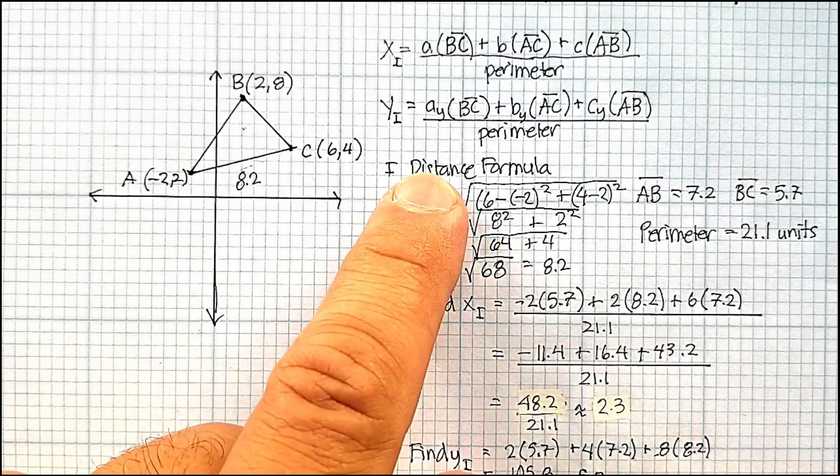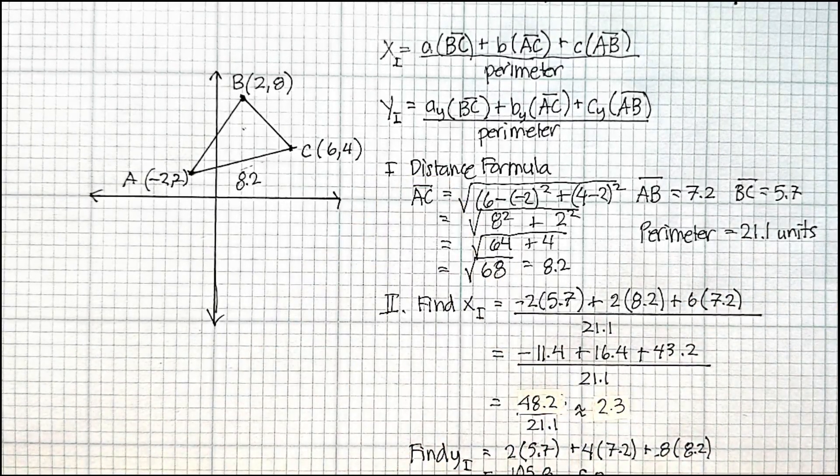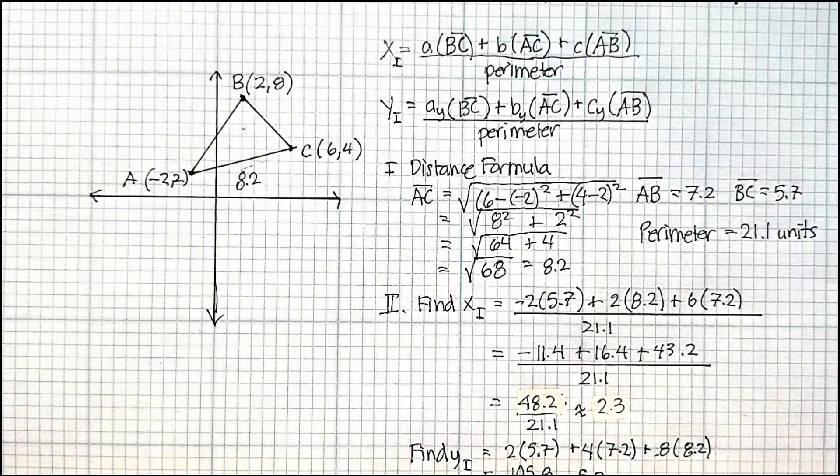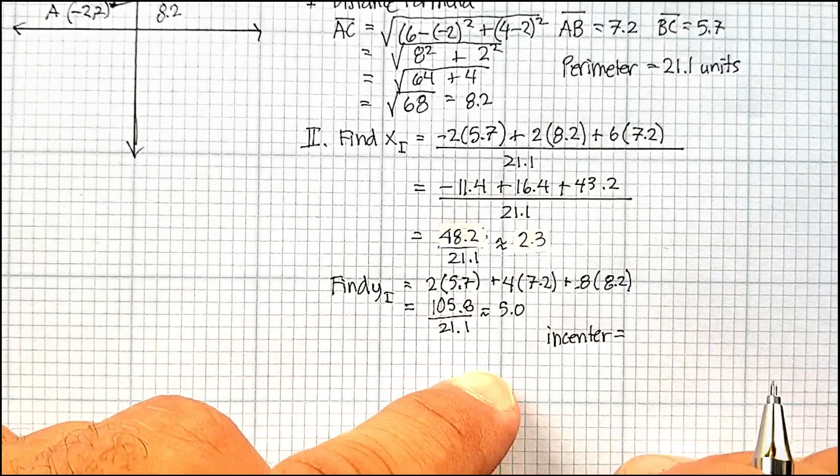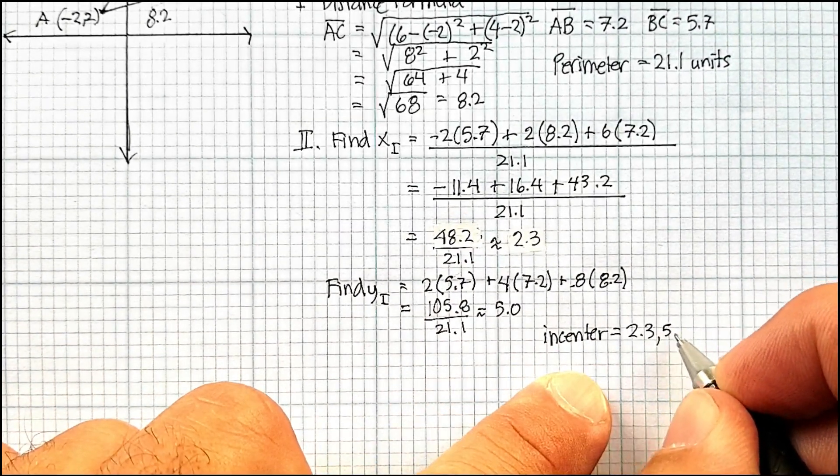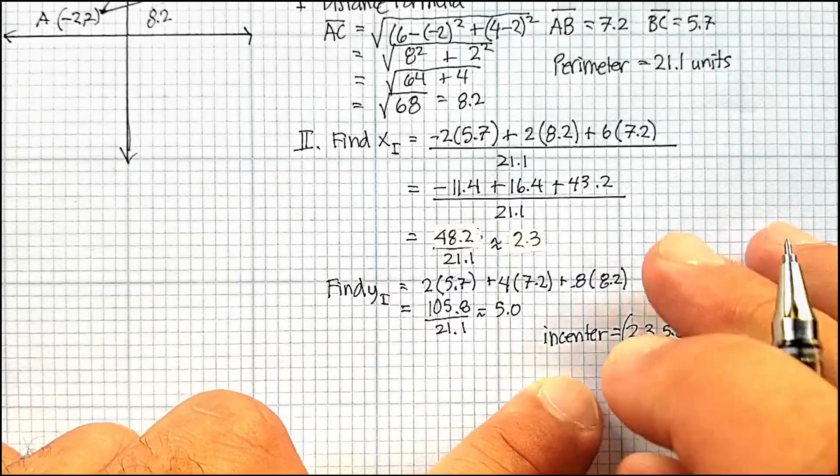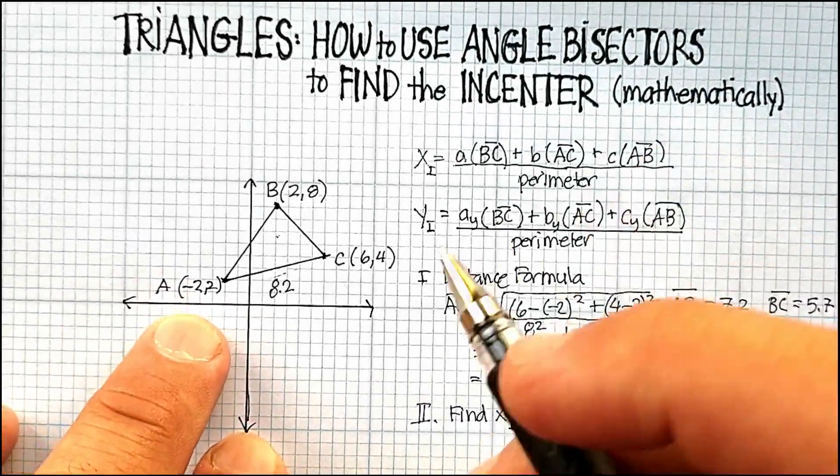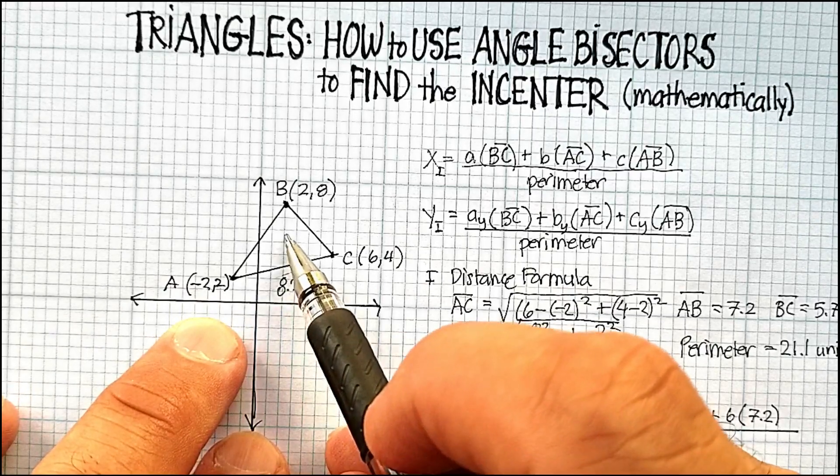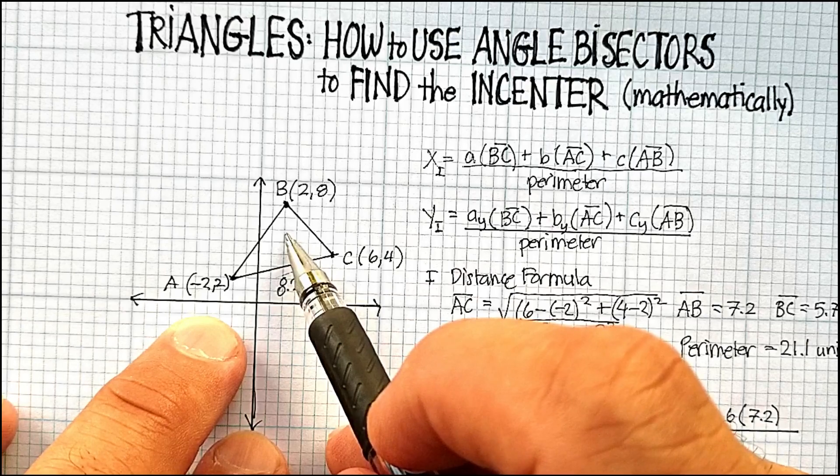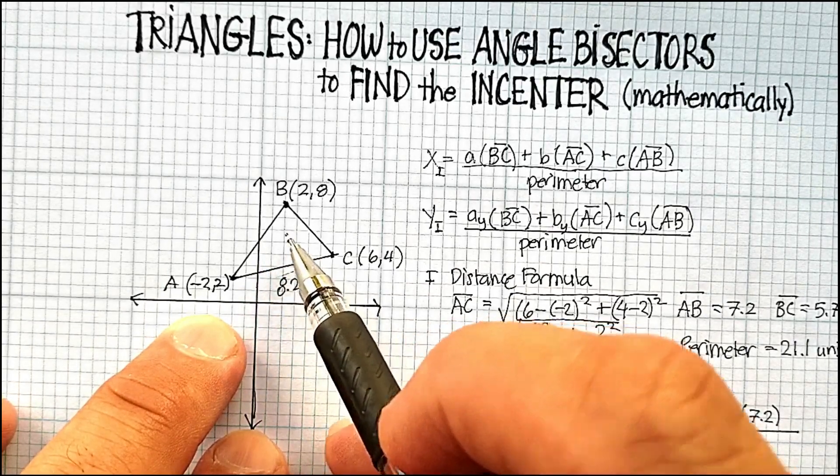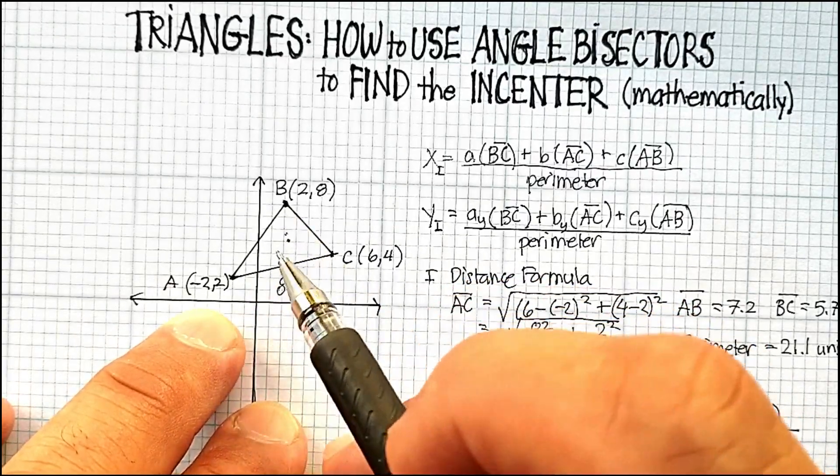And when I go to my triangle, 2.3 is approximately there, 5 is approximately there, 1, 2, 3, 4, 5, right there. And that certainly looks like an incenter.